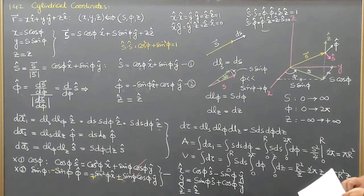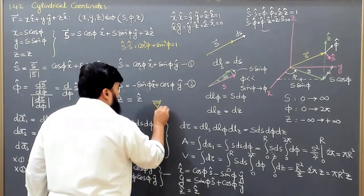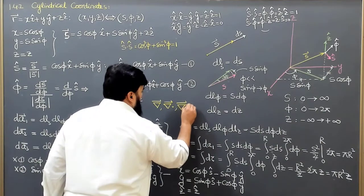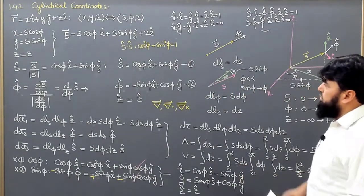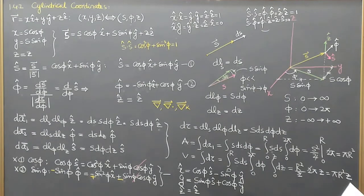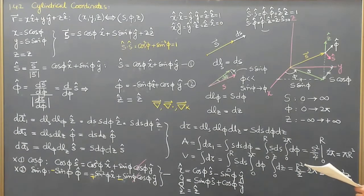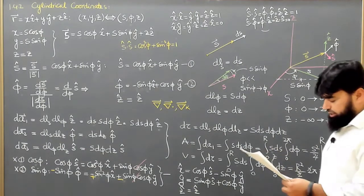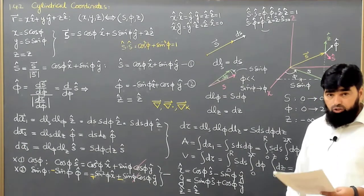This completes the cylindrical polar coordinates. Using these results we can express the gradient, divergence, curl, and Laplacian in cylindrical polar coordinates, which makes calculations easier. You can derive these results from your book — it will take more time, but it will boost your confidence in doing such calculations. Thank you.